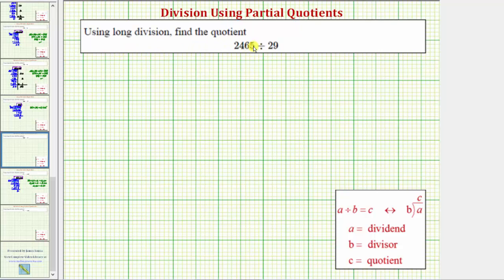We're asked to use long division to find the quotient. We have a four-digit number divided by a two-digit number.